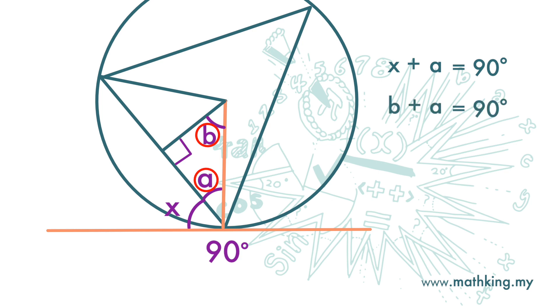Because in this triangle, a plus b plus 90 degrees gives us 180 degrees. So a plus b is 90 degrees.